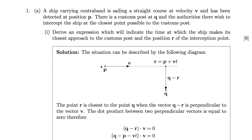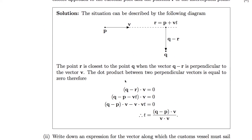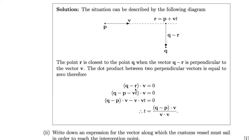The easiest way to do this is to draw a diagram. Here's where we know our customs vessel is and it's travelling along the vector V. Q is our observation point and the customs vessel will travel along this line until it gets to the closest point to Q. This point is determined where the vector Q minus R is perpendicular to V. We can use the fact that the dot product between two perpendicular vectors is equal to zero.